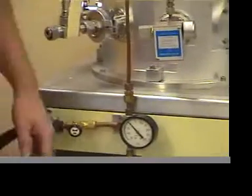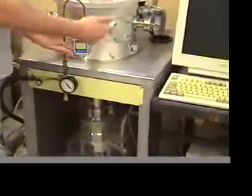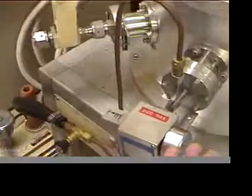This little gauge right here tells you what the pressure is inside the gas handling system relative to atmospheric pressure. Once you've done that, you can come over here and use the variable leak valve to basically let gas in and block it off from going into the vacuum chamber.